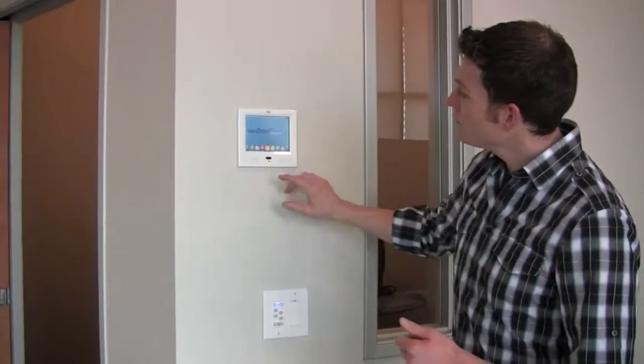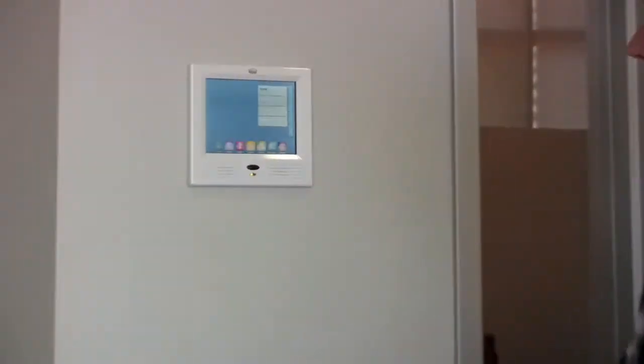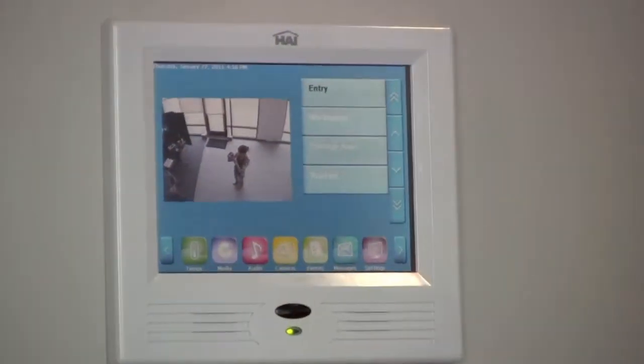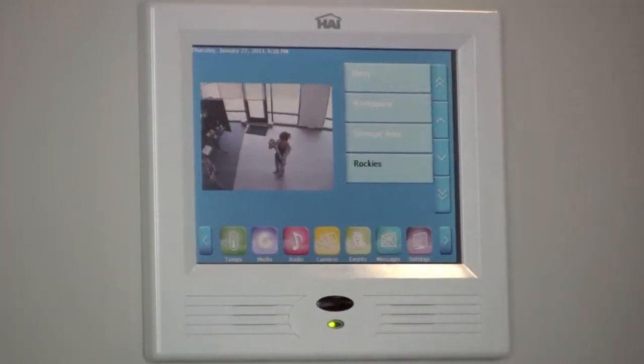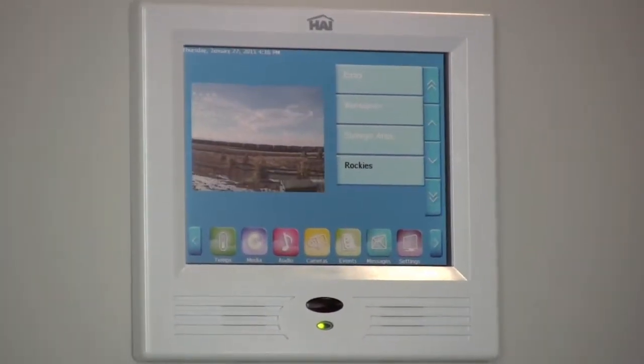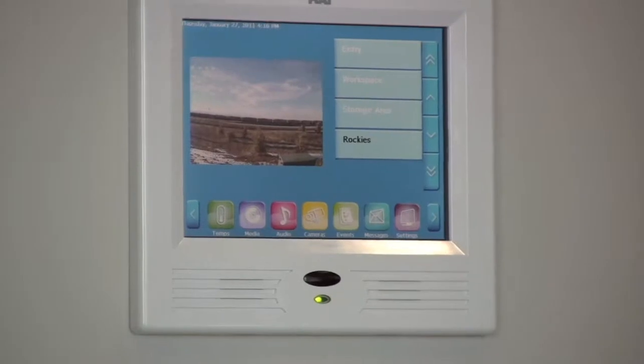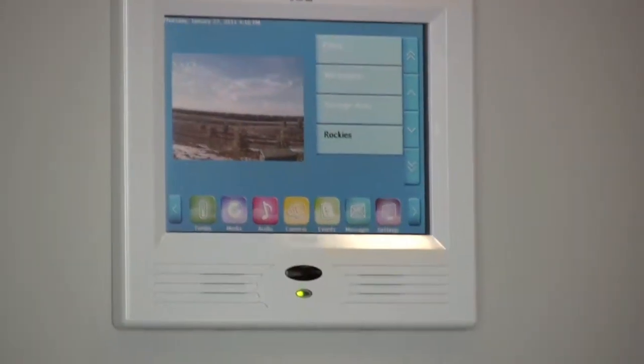From the main menu, simply clicking on the camera button, you'll see it brings up the pictures of all four cameras. Clicking on them, for instance, who's at the front door, who's out back in this case, or what's going on in our Rocky Mountains.